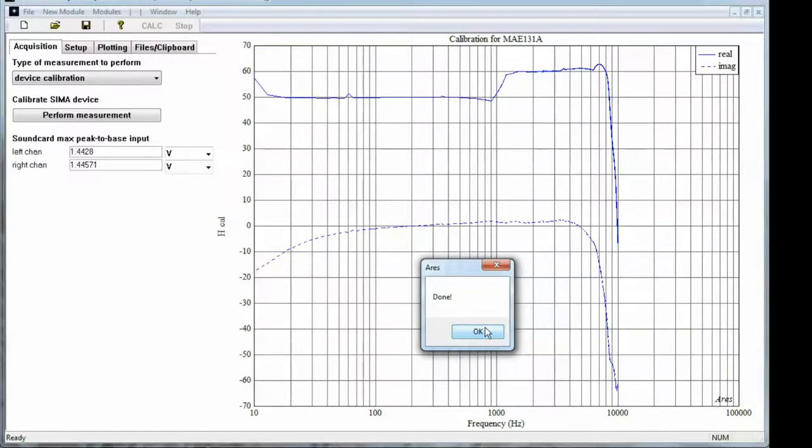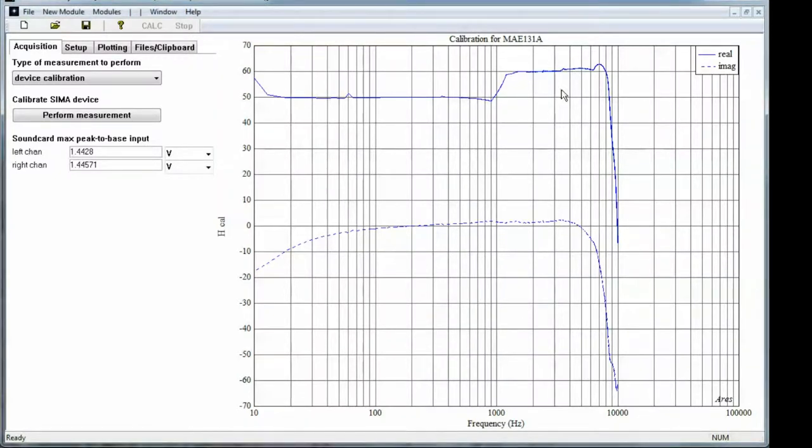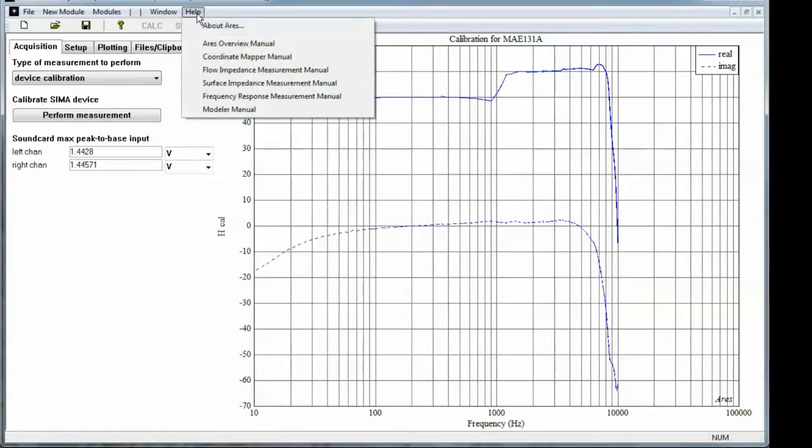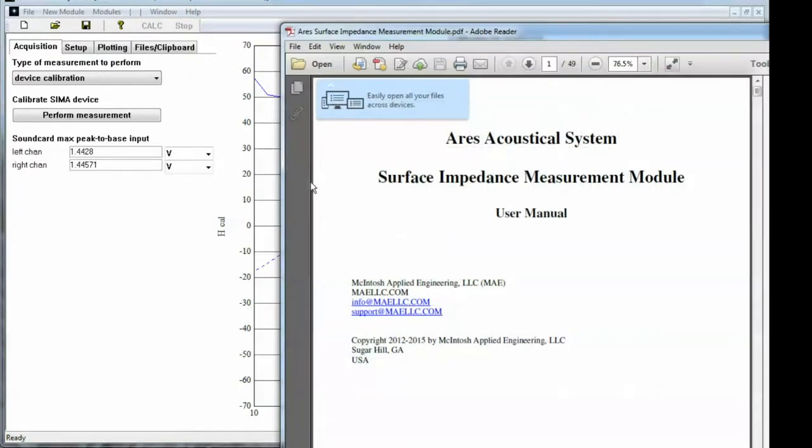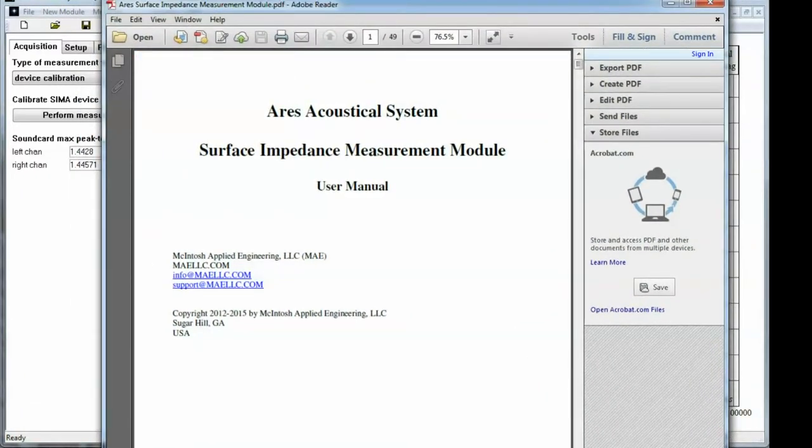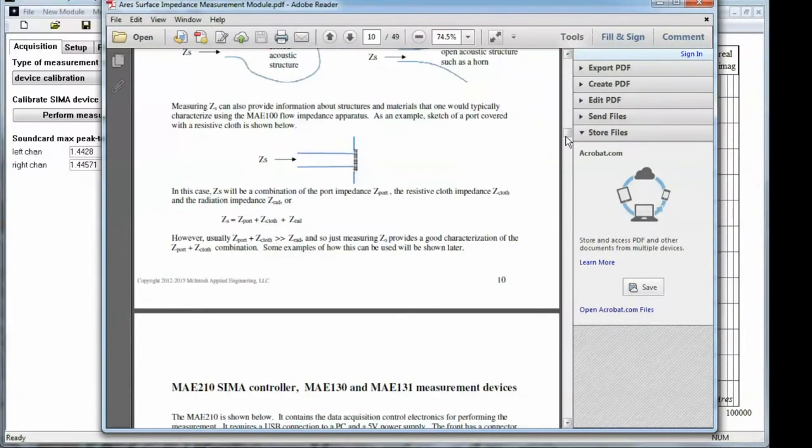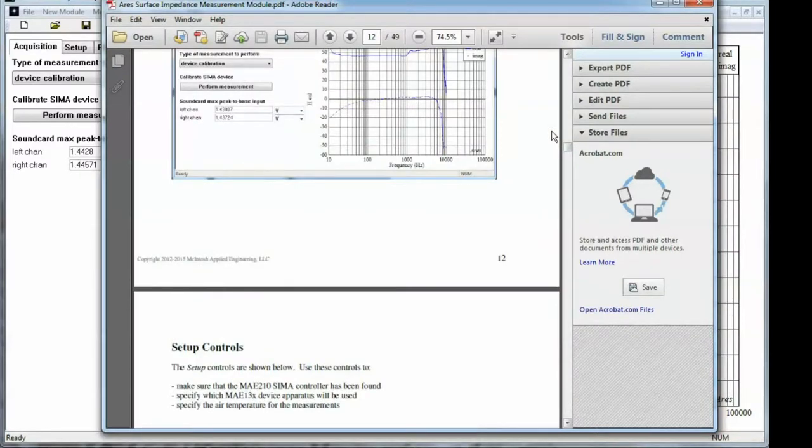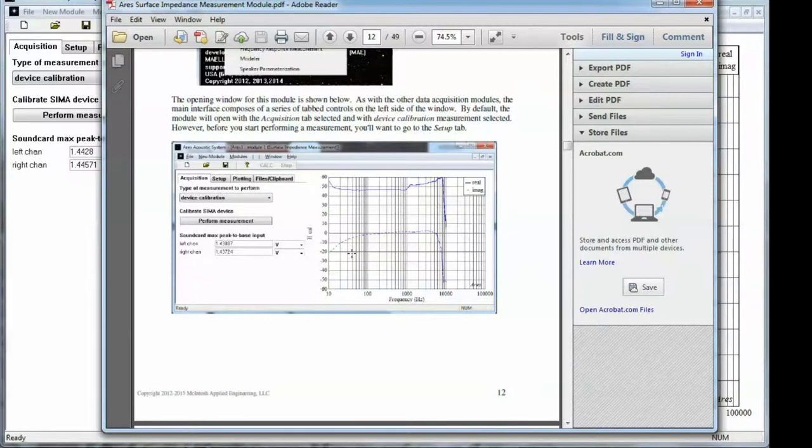So when the measurement is done, the dialog box will pop up indicating it's completed calibration procedure. And you will see a calibration graph in the main ARIES window and it will update the sound card's maximum peak to base input level. What I'd recommend is, while you're getting used to using these devices, check that the calibration curve is somewhat close to what's in the manual for the SEMA module. To pull the manual up, you can go to the Help menu, select Surface Impedance Measurement Manual. It will find it on your system and we can page through here until we see a calibration curve. Here's a calibration curve for the 131 and they look similar and the levels are about right. So we're fine with that.